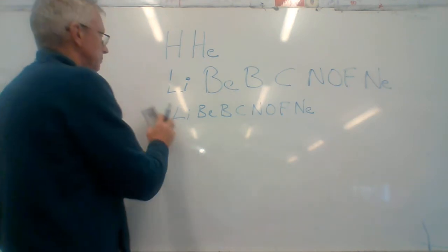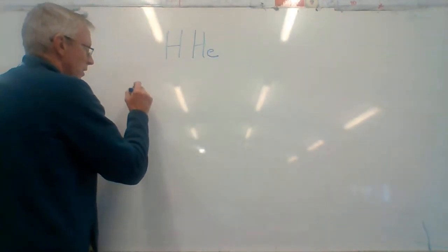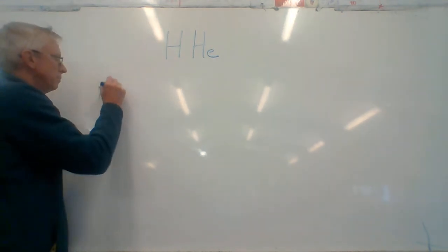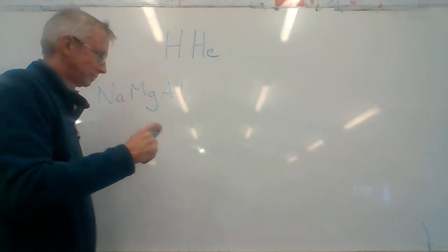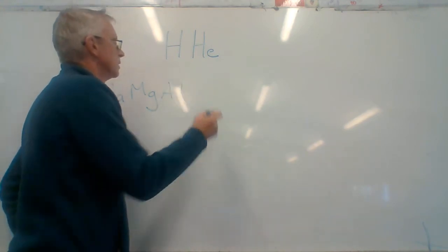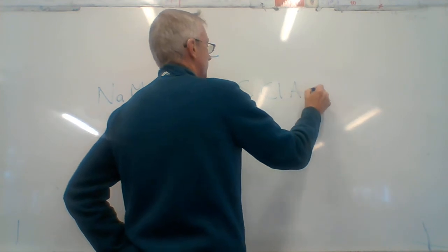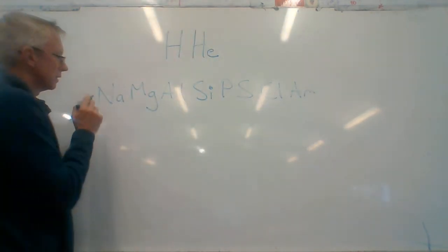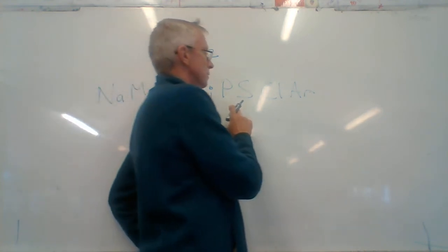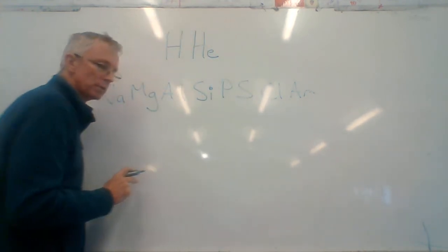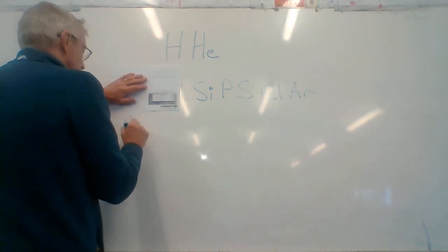And then you go on to word number three. Line number three on the periodic table is NaMgAlSiPSClAr. That's eight elements in there. So I'm going to go through the game. The key is pronouncing every letter: NaMgAlSiPSClAr. Same thing, write it for five minutes until you know it, practice it from memory.